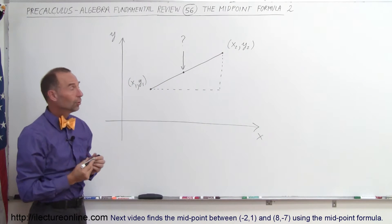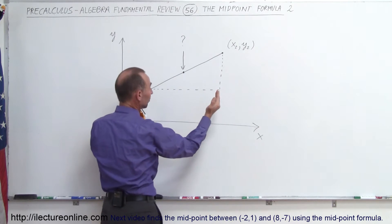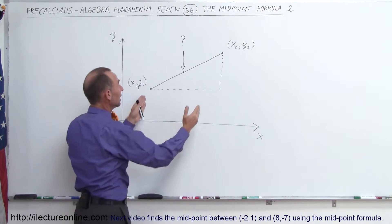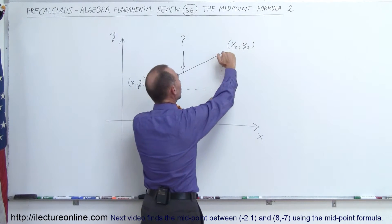And this is the distance between Y2 and Y1. And so what it comes down to, then, is the coordinates of this middle point would be equal to, for the X coordinate, it would be halfway between those two points, and for the Y coordinate, it would be halfway between those two points.